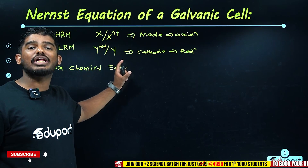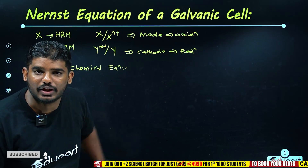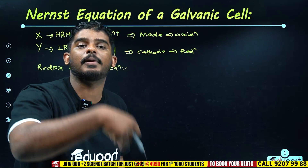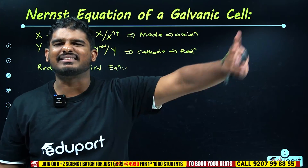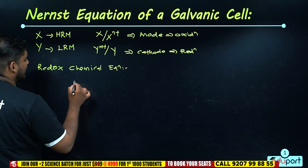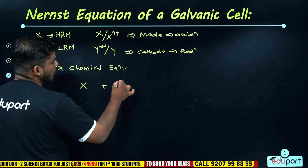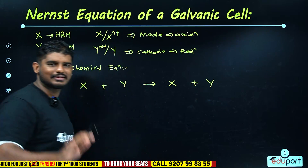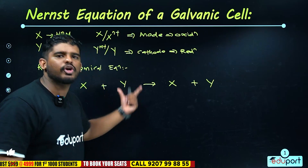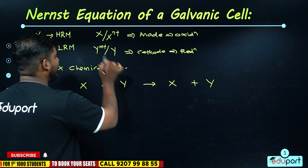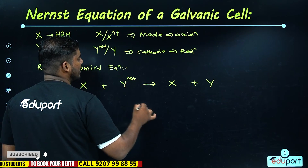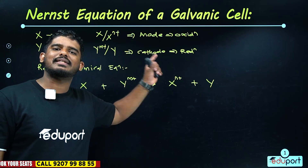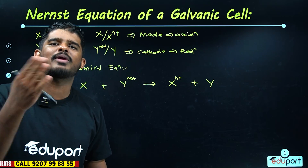Anode plus cathode: high-reactive plus low-reactive gives high-reactive ion plus low-reactive metal. That is, X plus Y gives X-n-plus plus Y. The charge of Y is m-plus and the charge of X is n-plus.